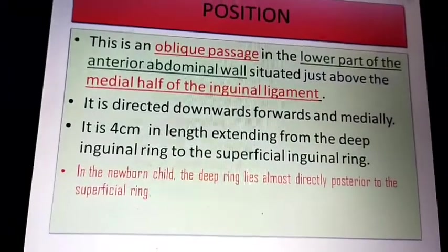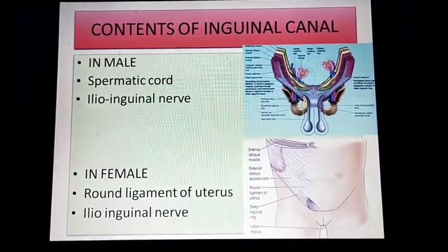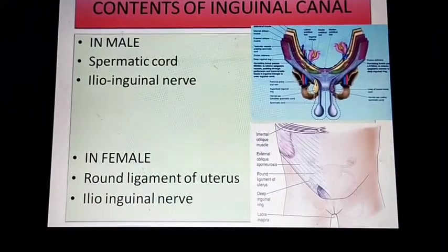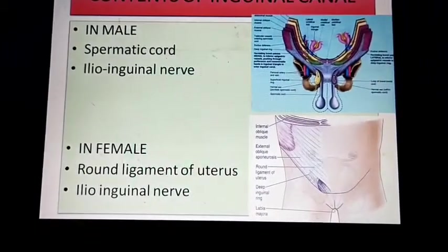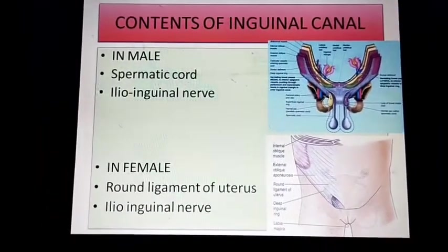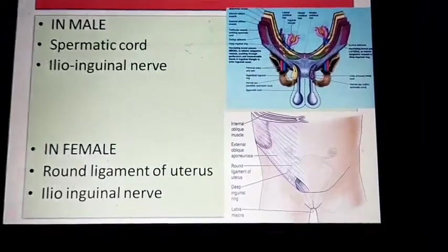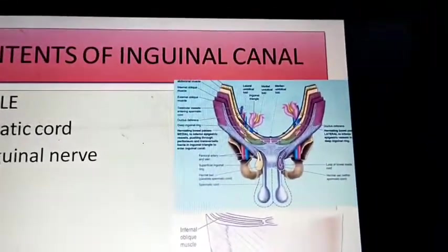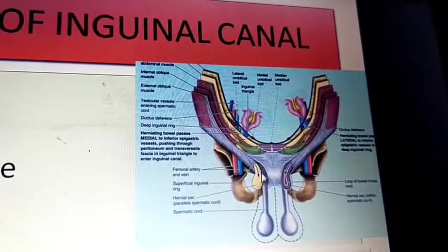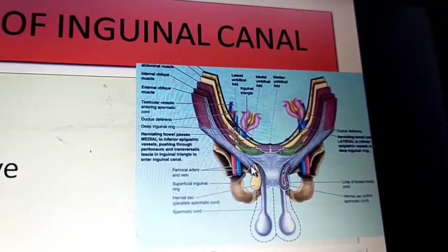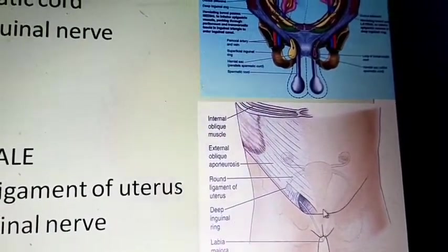The contents of the inguinal canal: in males, the main content is the spermatic cord; another content is the ilioinguinal nerve. In females, the contents are the round ligament of the uterus and the ilioinguinal nerve. In diagrams, the inguinal canal shows the deep inguinal ring, superficial inguinal ring, and the spermatic cord passing through it; in females, the round ligament of the uterus passes through.